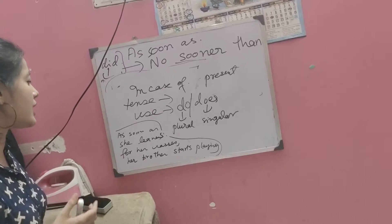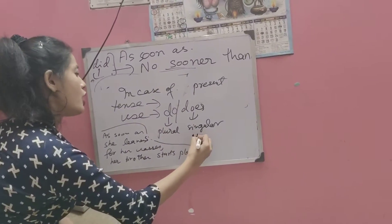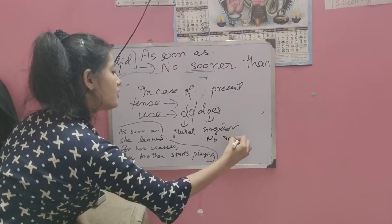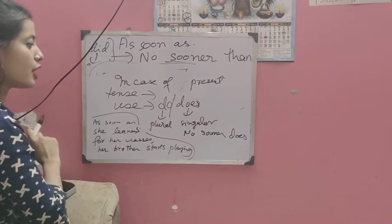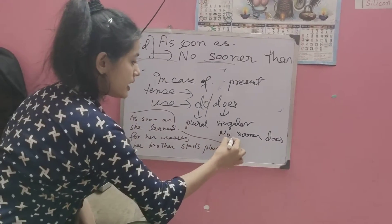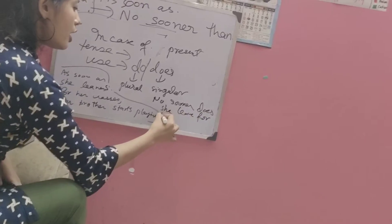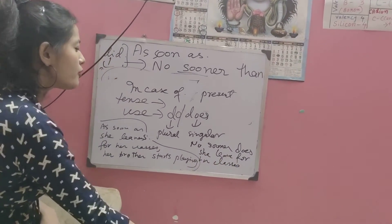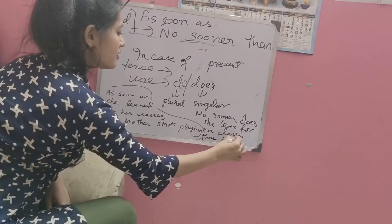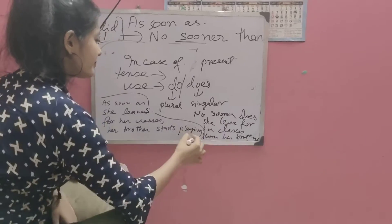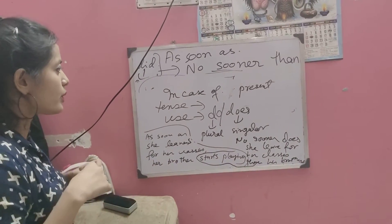Let's convert this one: 'As soon as she leaves for her classes, her brother starts playing.' So — no sooner — does. 'Does', because it's singular. 'No sooner does she leave for her classes' — again, this comma would be replaced by 'then' — 'then her brother starts playing.' So that was it.